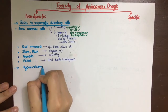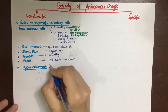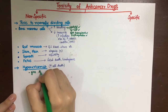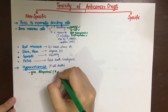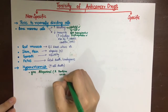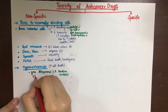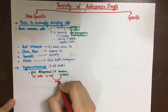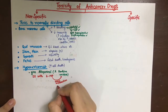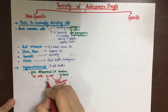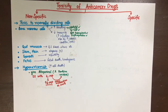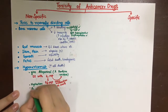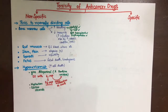Another important side effect is hyperuricemia, due to increased cell death and thus increased nucleic acid release metabolized into uric acid. This can be managed with allopurinol, but an important drug interaction must be noted: 6-mercaptopurine is also metabolized by xanthine oxidase, the enzyme inhibited by allopurinol, which can lead to increased 6-mercaptopurine concentration in the blood. Hyperuricemia can also be managed by hydration and corticosteroids.